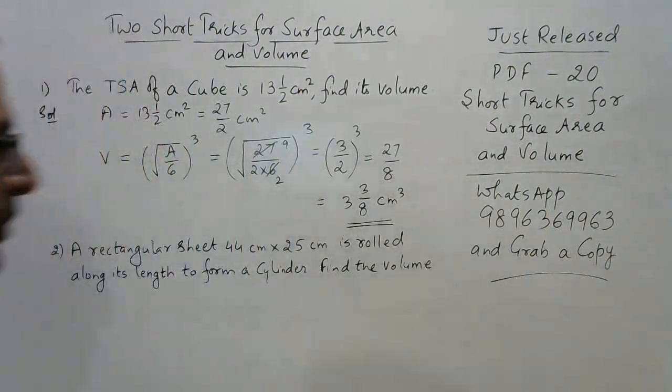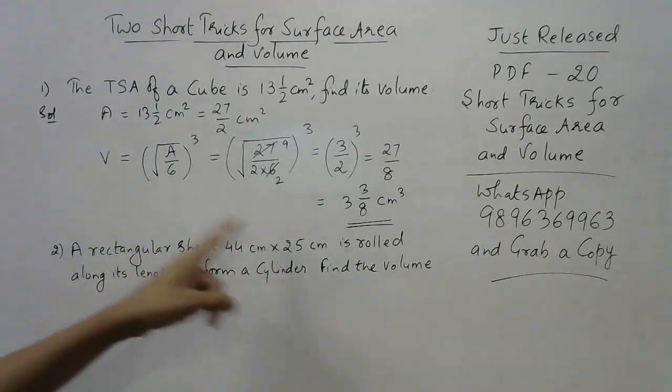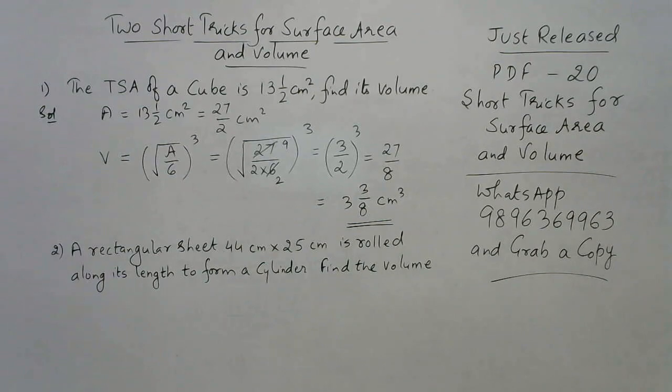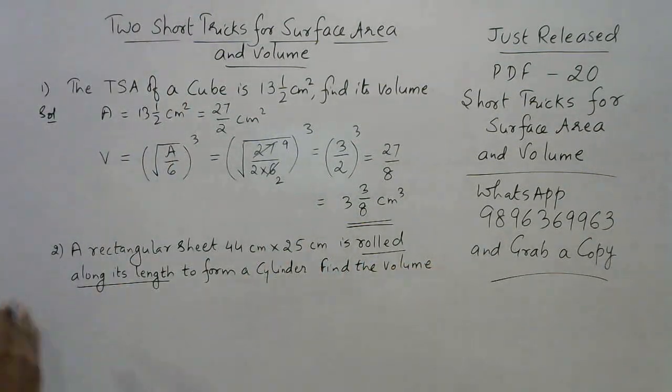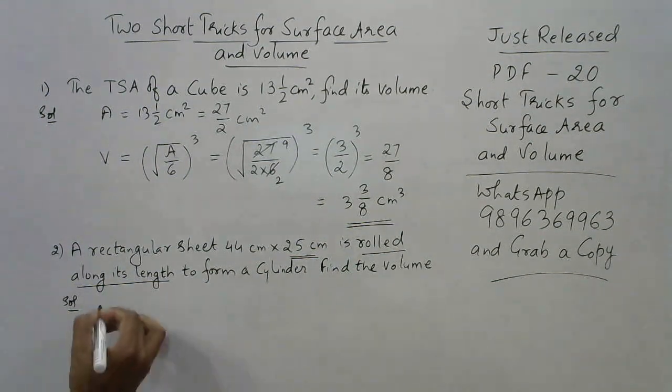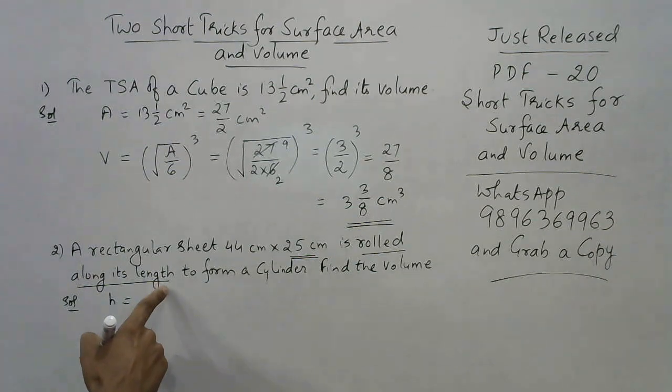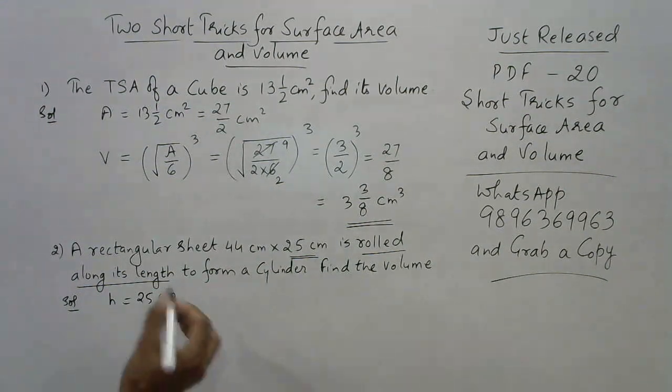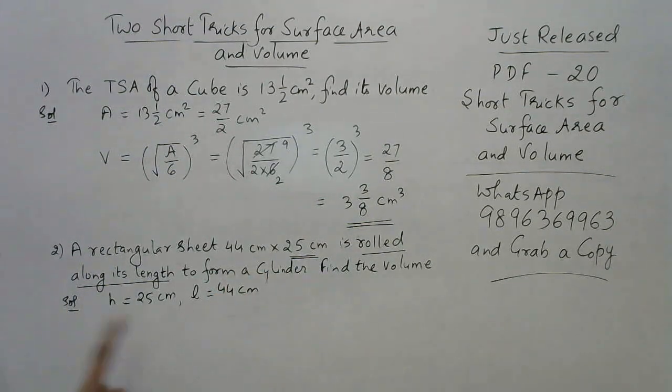For finding the volume, you need the radius and the height. It is rolled along its length, so which is the other side? That is 25 centimeters. We will take the height of the cylinder as the one which is not mentioned here - breadth is 25 centimeters, so we take h as 25 centimeters. The length l is 44 centimeters.